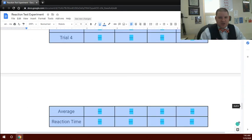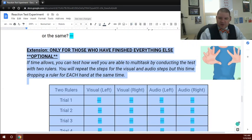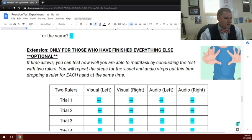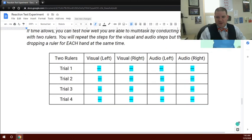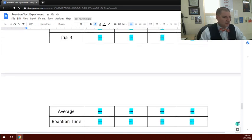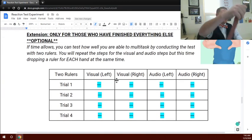And then the extension is optional. You do not have to do this part. This is for time in class for those people in class that work a little bit faster than others. You can try catching two rulers at once, both with sight and audio. You do the same thing, except instead of dropping one, you drop two at the same time, and you track both your left and right hand. So seeing if you are actually ambidextrous or not, which is being able to use both hands in a similar sense.